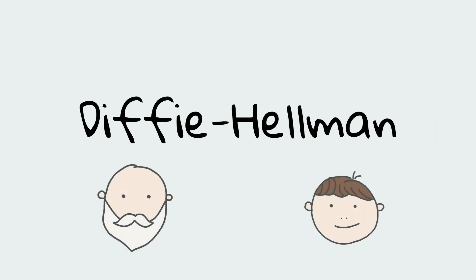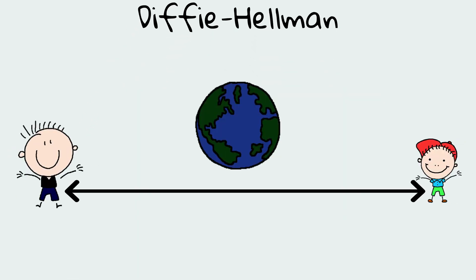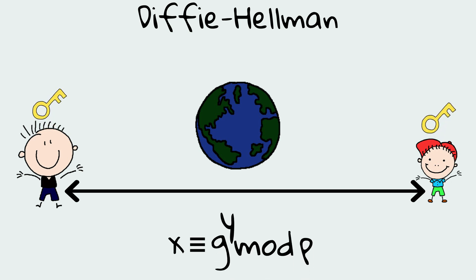The discrete logarithm problem is the base of the Diffie-Hellman key exchange algorithm, which was invented in 1976. Diffie-Hellman key exchange can be used to securely exchange a secret key over an insecure network. It works using the concepts of prime numbers and modulo operations.